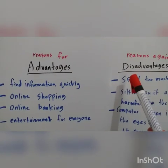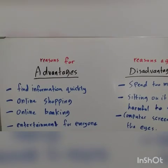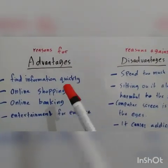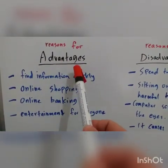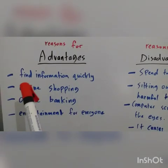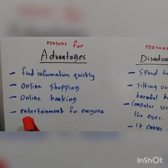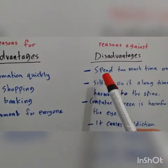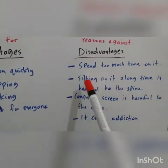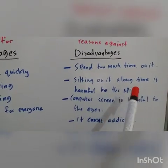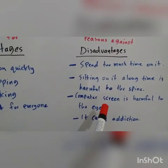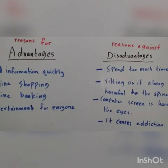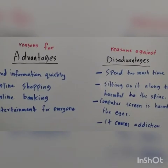In the second exercise, you have to think of the advantages and disadvantages of the internet and make a list of your ideas. The advantages of using the internet: you can find information quickly, do online shopping and online banking, and it is a resource of entertainment for everyone. The disadvantages: you will spend too much time on it and waste your time; sitting on the internet for a long time is harmful to the spine; the computer screen is harmful to the eyes; and the internet also causes addiction. Please try to write your own advantages and disadvantages.